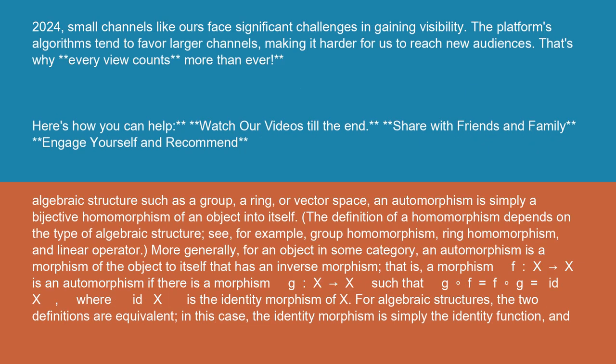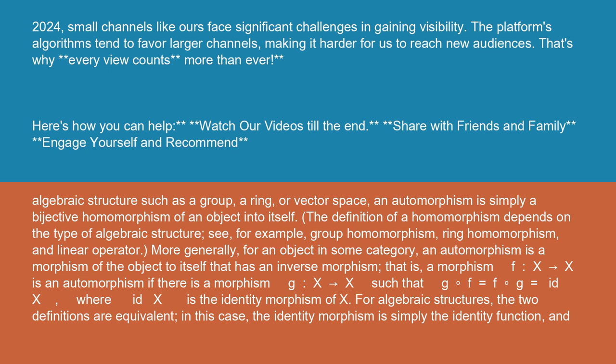Definition: In an algebraic structure such as a group, a ring, or vector space, an automorphism is simply a bijective homomorphism of an object into itself. The definition of a homomorphism depends on the type of algebraic structure. See, for example, group homomorphism, ring homomorphism, and linear operator.